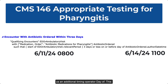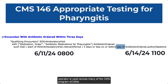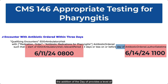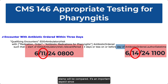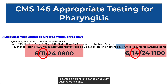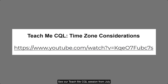Our example also shows us an additional timing operator: day of. This operator is used across many of the CMS program eCQMs to indicate the level of precision for the time comparison. The start of the relevant period and antibiotic author date time each have an associated date time stamp. The addition of day of provides a level of precision when comparing the date time stamps — only the date value of the day portion of the time stamp will be compared. This is important since anything at day precision or greater will not perform a time zone offset adjustment before the comparison, preventing timing issues across different time zones or daylight savings transitions. See our Teach Me CQL session from July 2022 titled Time Zone Considerations for more information.